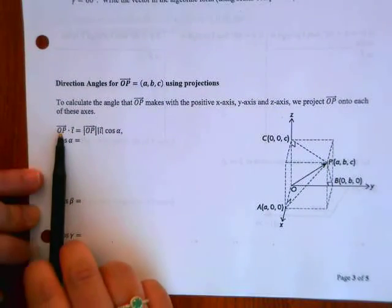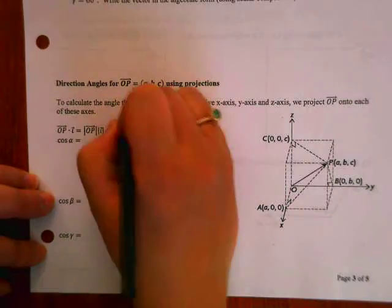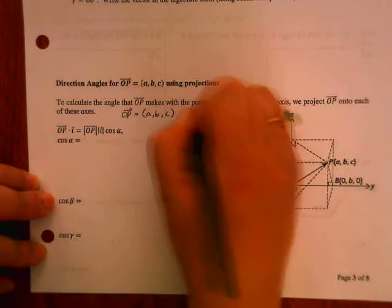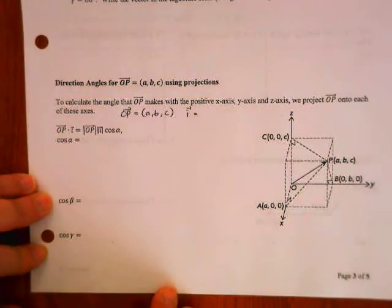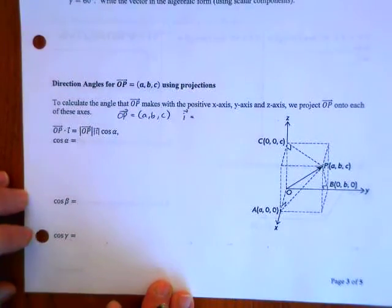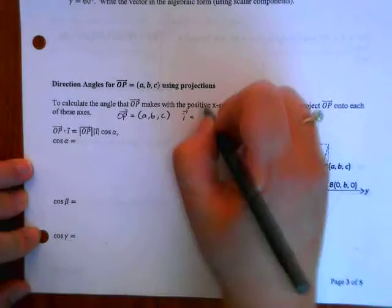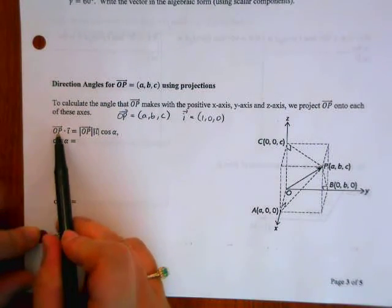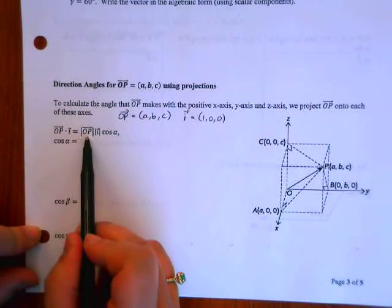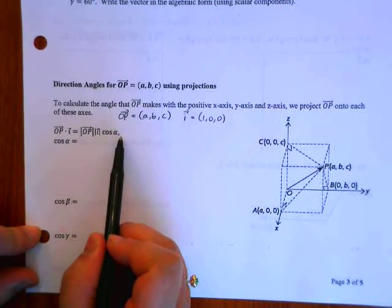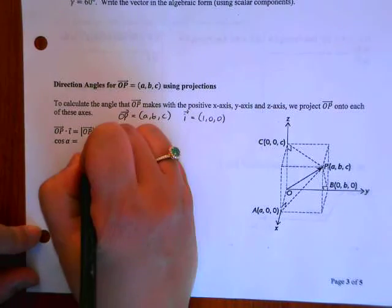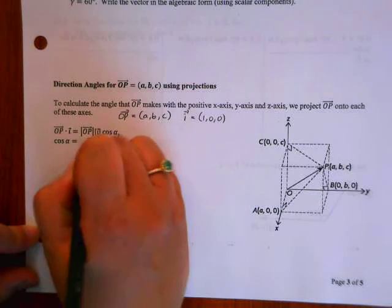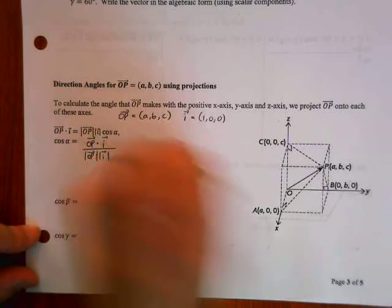So OP projection onto I, and I, remember, is - so OP is given as A, B, C. I is the unit vector on which axes? On the X axis, yeah. So it's 1, 0, 0. So if you want the dot product of OP and I, then it's magnitude of OP times magnitude of I times cos alpha. And then if you rearrange this, you get OP dot product with I divided by magnitude of OP times magnitude of I.